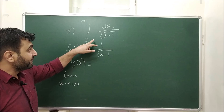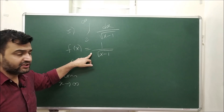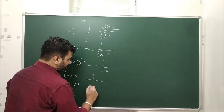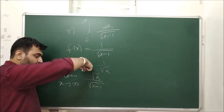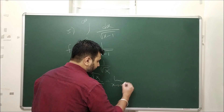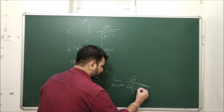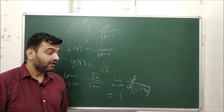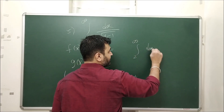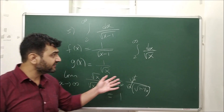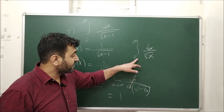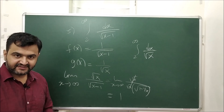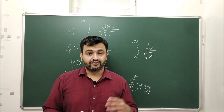Now the last example — improper integral of type 1. The function is positive and continuous. Ignoring constants, choose G = 1/√x. Then f/g: root x comes to the top, and taking the limit as x → ∞ by factoring out √x gives √(1 − 1/x) → 1, which is positive and finite. What about integral G? By the P-integral test from our earlier lecture: since the power is 1/2 < 1, the integral ∫₂^∞ x^(−1/2) dx diverges. Therefore by limit comparison test this integral also diverges. That's how one can use limit comparison test for improper integrals.